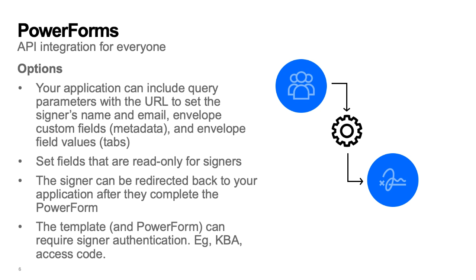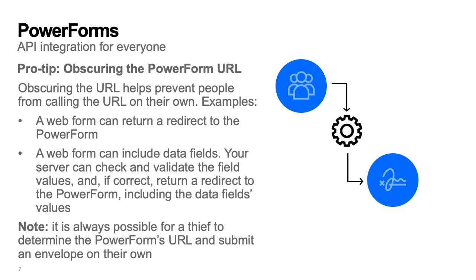Additional options for your Power Form. Your application can include query parameters with the Power Forms URL to set the signer's name and email, envelope custom fields, metadata, and envelope field values, or tabs. Using query parameters, your application can set values for fields that are read-only for the signer. The signer can be redirected back to your application after they complete the Power Form. The template and Power Form can include some types of signer authentication — for example, KBA (knowledge-based authentication), access code, etc.